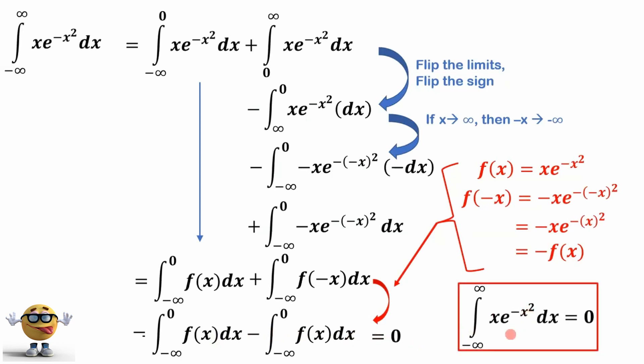So that's it. Our integral of x times e to the negative x squared from negative infinity to infinity, because this is an odd function, equals zero.